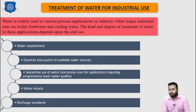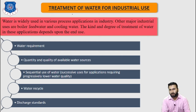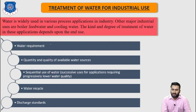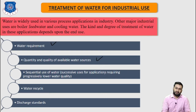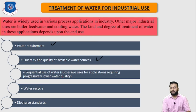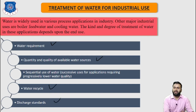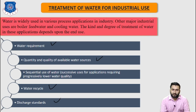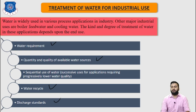There are a number of factors that must be taken into consideration in designing and operating industrial water treatment facilities. These include water requirements, quantity and quality of available water sources, sequential use of water such as successive use for applications requiring progressively lower water quality, water recycling, and discharge standards. There are mainly two ways for treating water for industrial use: internal treatment and external treatment.